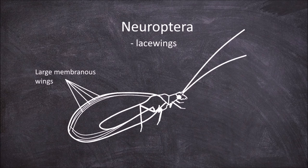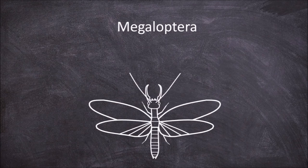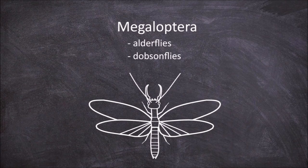The next order is the Megaloptera, which are the alderflies and the dobsonflies. The characteristic feature of this order is the presence of an enlarged anal area of the hindwing that is pleated and folds up like a fan at rest.